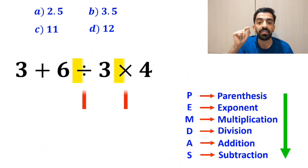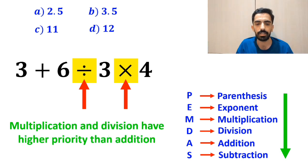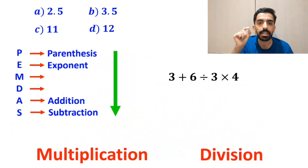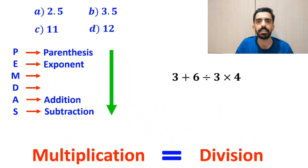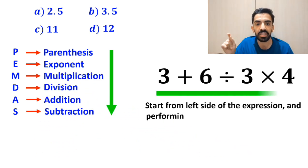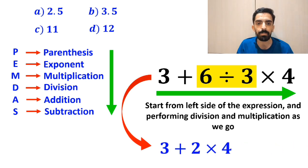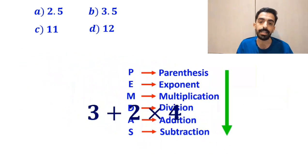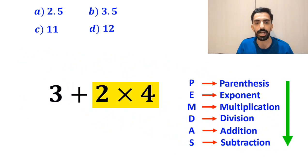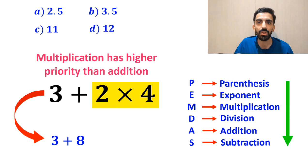Now it's time to perform the division and multiplication, because multiplication and division have higher priority than addition. However, we must pay close attention that multiplication and division have equal precedence. In this case, the best thing to do is to start from the left side of the expression, performing division and multiplication as we go. So we start with the division between 6 and 3, writing 3 plus 2 multiplied by 4. In the next step, we go to the multiplication between 2 and 4, giving us 3 plus 8, which ultimately gives us the answer 11.